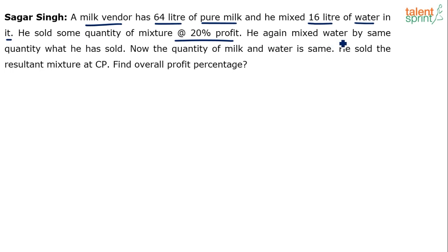He again mixed water by the same quantity whatever was sold. So whatever he has sold, the same quantity of water has been added back. Now the quantity of milk and water is same — after adding that water, the quantity of milk and water becomes equal. Earlier the quantity was different: 64 liters milk and 16 liters water. We sold some part of it, then added the same part of water, and milk and water becomes equal.